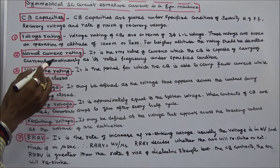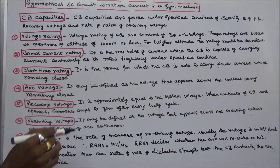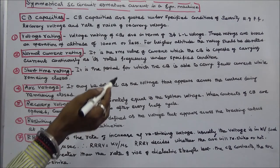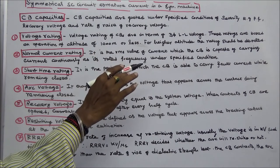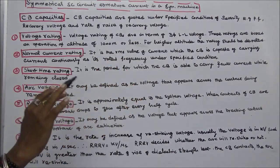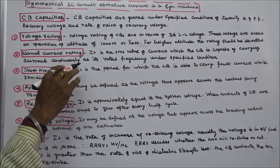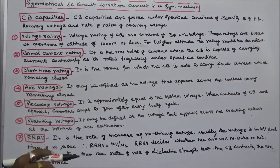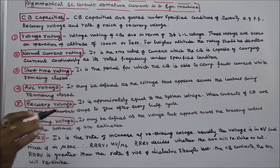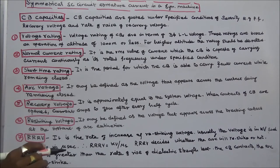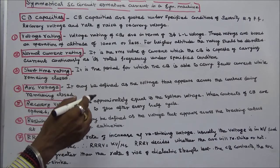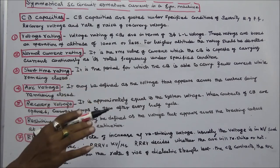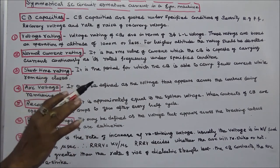Second, normal current rating: it is the RMS value of current which the circuit breaker is capable of carrying continuously at its rated frequency under specified conditions. Third, short time rating: it is the period for which the circuit breaker is able to carry fault current while remaining closed.